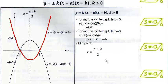We do the same method to sketch the graph for y equals to negative k(x minus a)(x minus b). Note that the negative curve is a reflection of the positive curve about the x-axis.